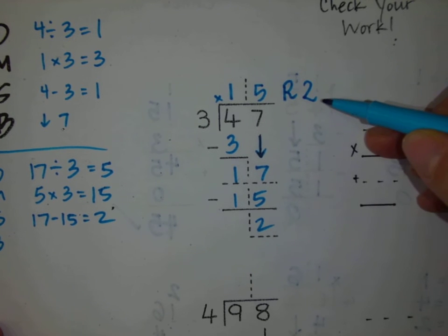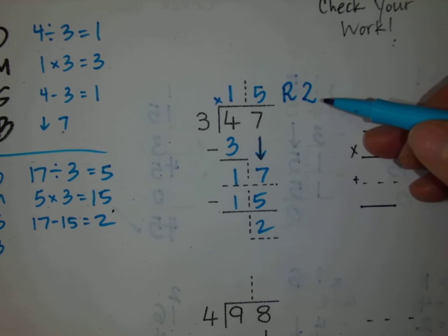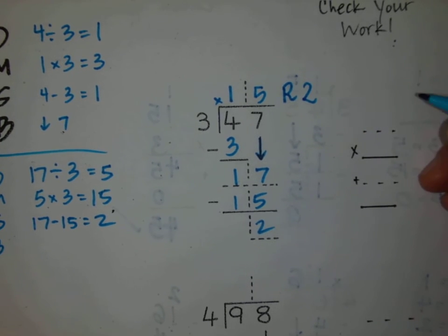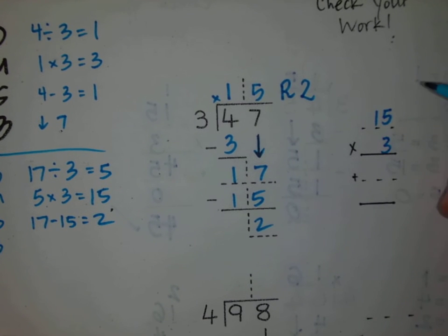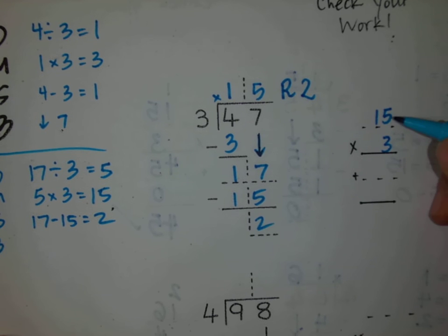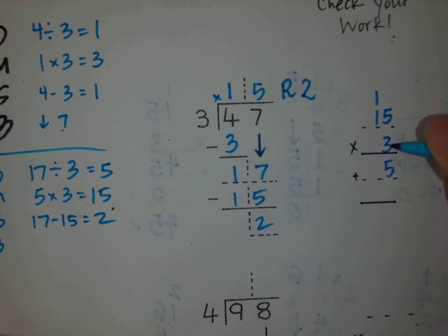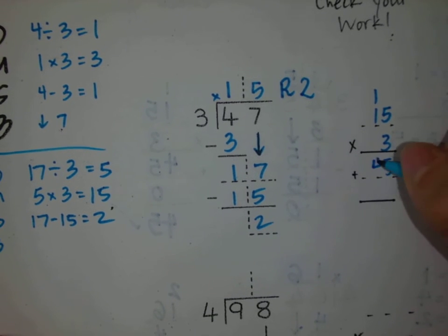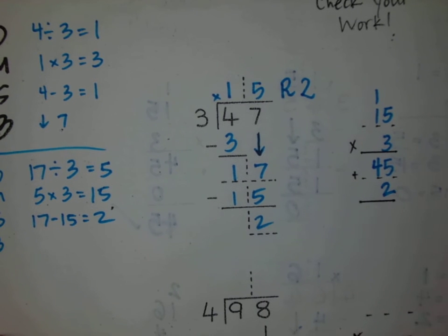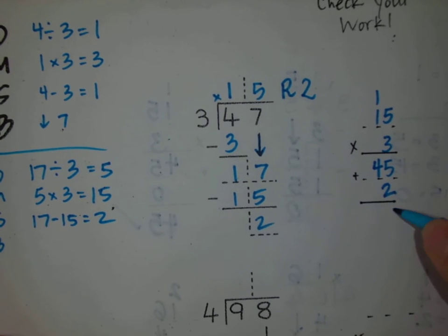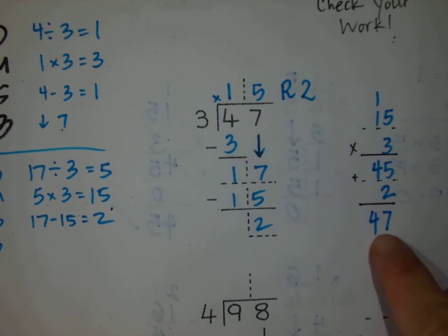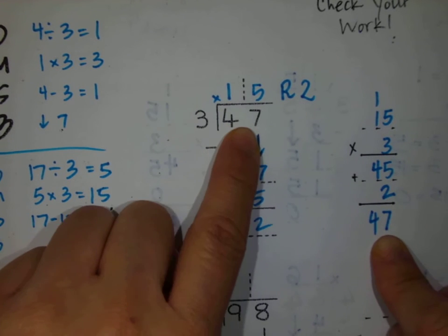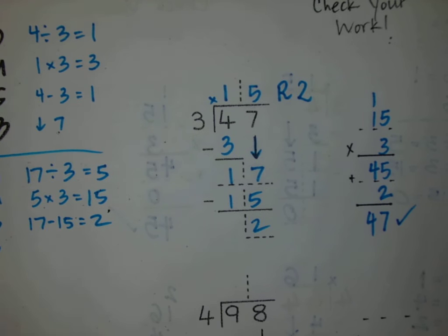Please make sure that your numbers are clear. Now let's check our work. We have our quotient, which is 15, and our divisor, which is 3. We are going to multiply these together. 5 times 3 is 15, 1 times 3 is 3 plus 1 is 4. We have a remainder of 2. 5 plus 2 is 7, and 4. That gives us 47 — same as our dividend. Check! We're good to go there.